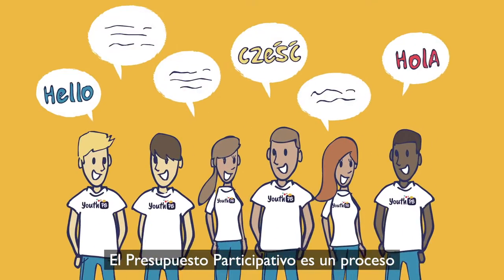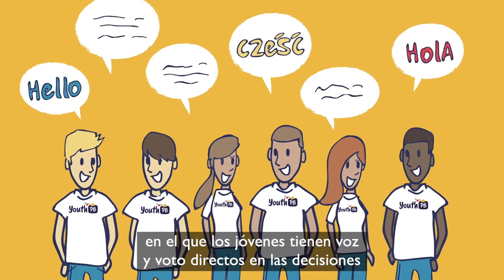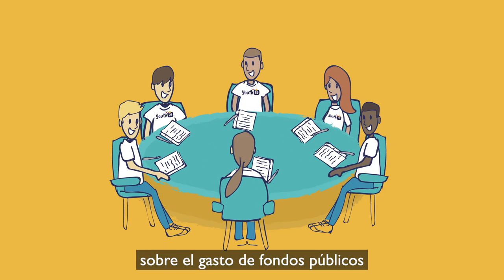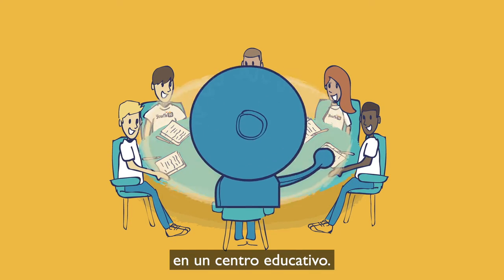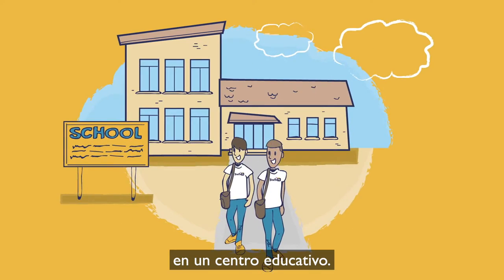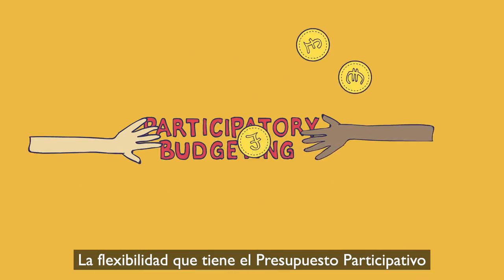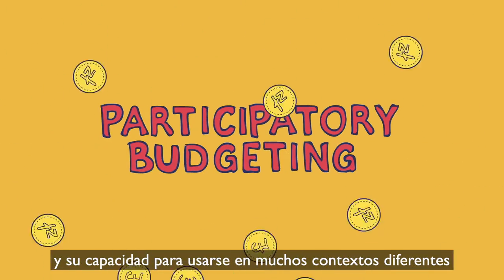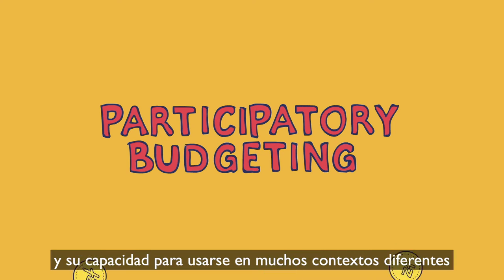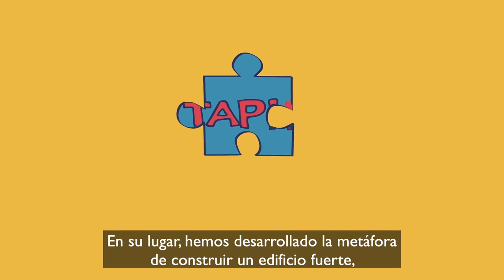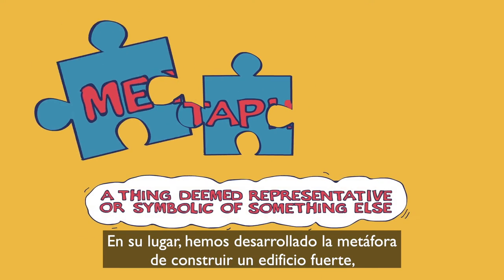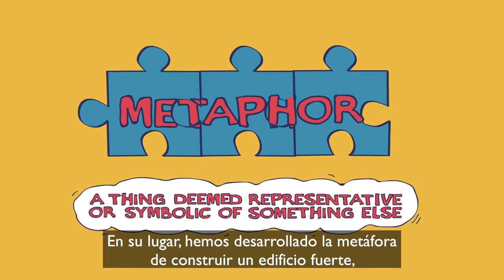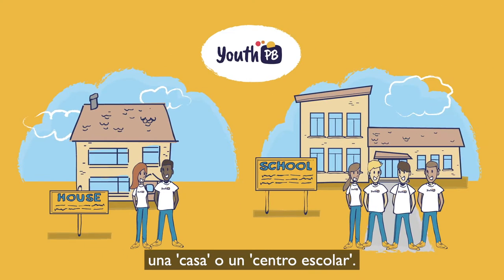Youth PB is a process where young people have a direct say in decisions about the spending of public funds in a school or community setting. The flexibility of participatory budgeting and its ability to be used in many different contexts means there is no one single model.